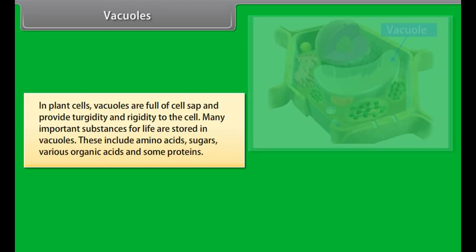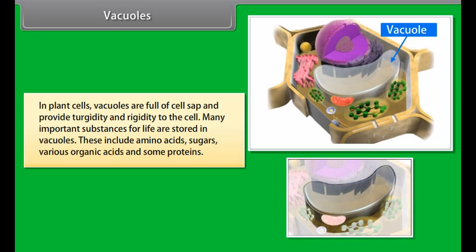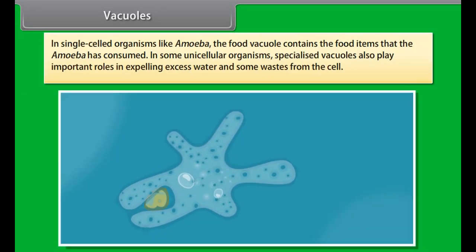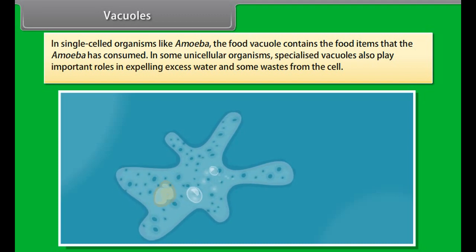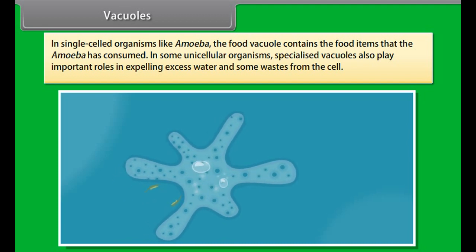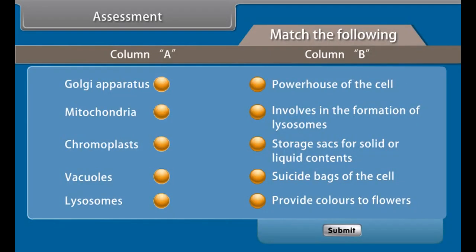Plastids are present only in plant cells, not in animal cells. Plastids are similar to mitochondria in external structure. There are two types of plastids: chromoplasts, which are colored plastids, and leucoplasts, which are white or colorless plastids. Chromoplasts provide different colors to flowers and fruits. Leucoplasts are colorless plastids that store materials like starch, oils and protein granules. Chlorophyll-containing plastids are known as chloroplasts, and these are important for photosynthesis in plants.